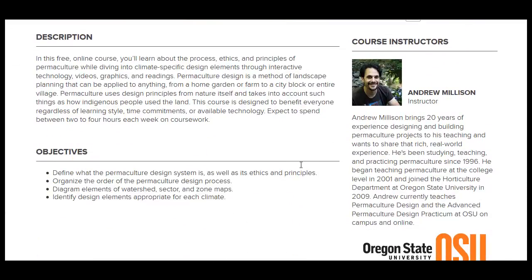They have some objectives: define what a permaculture design system is and the ethics and principles, organize the order of the permaculture design process diagram, elements of watershed sector and zone maps, and identify design elements appropriate for each climate.